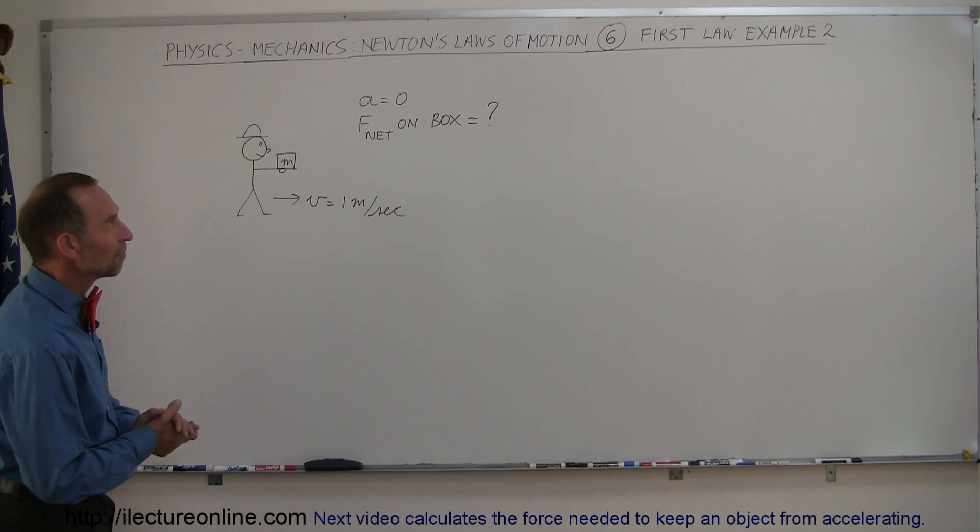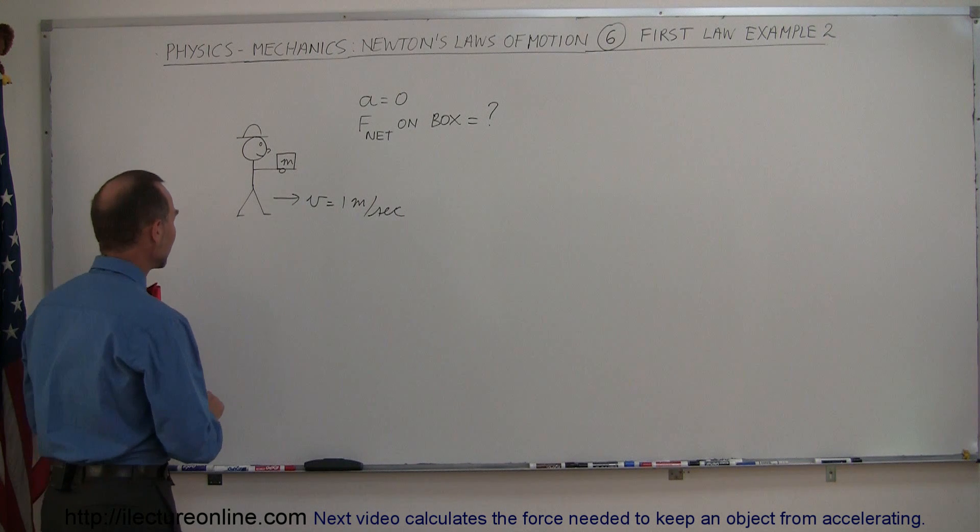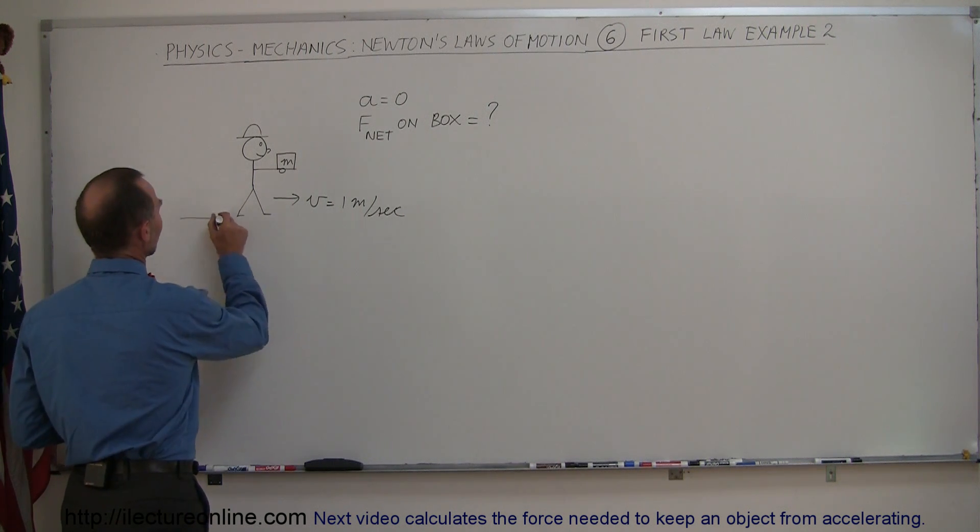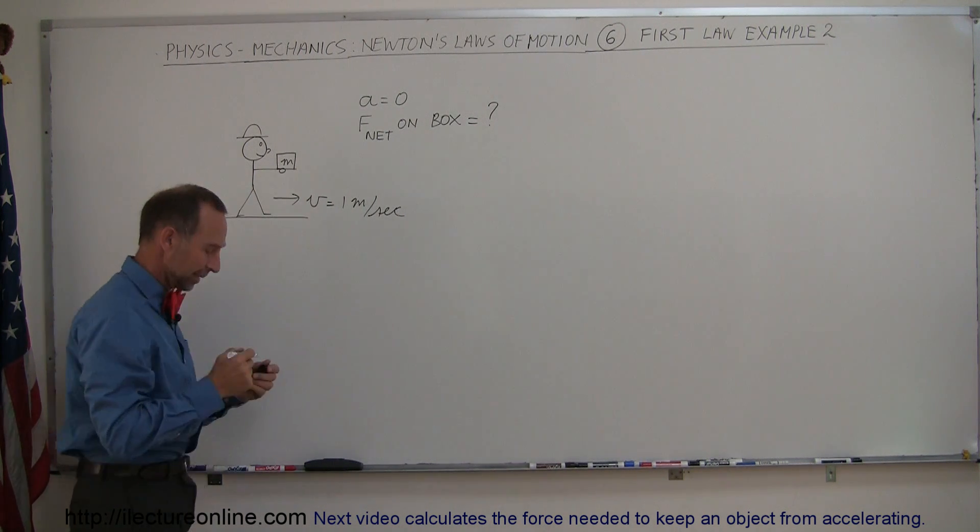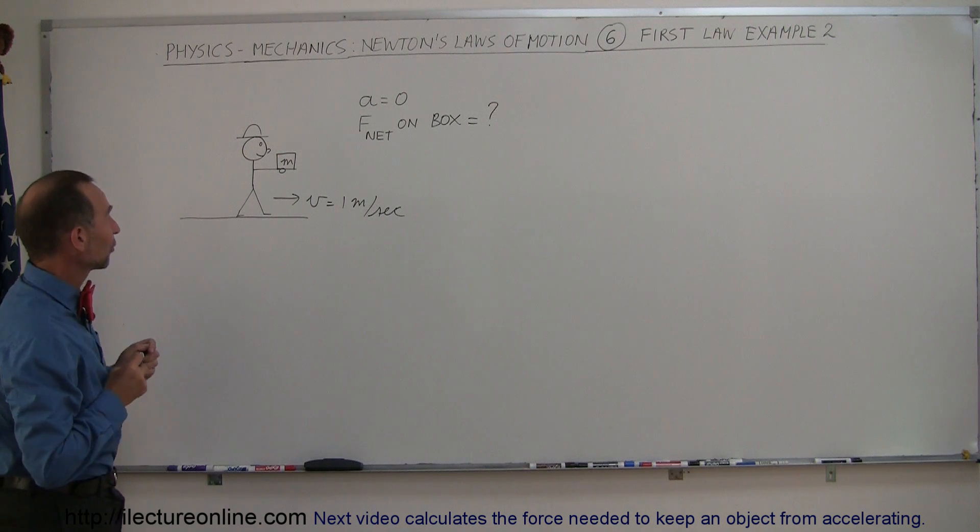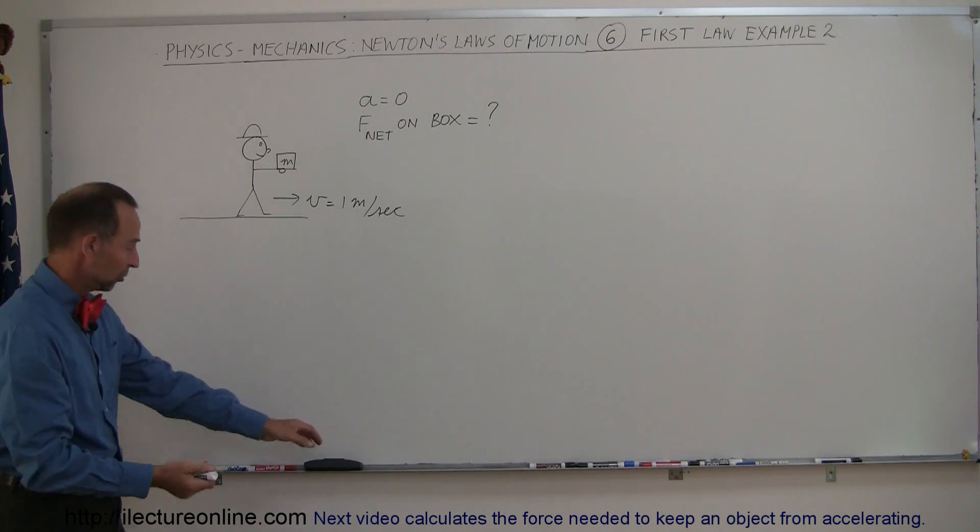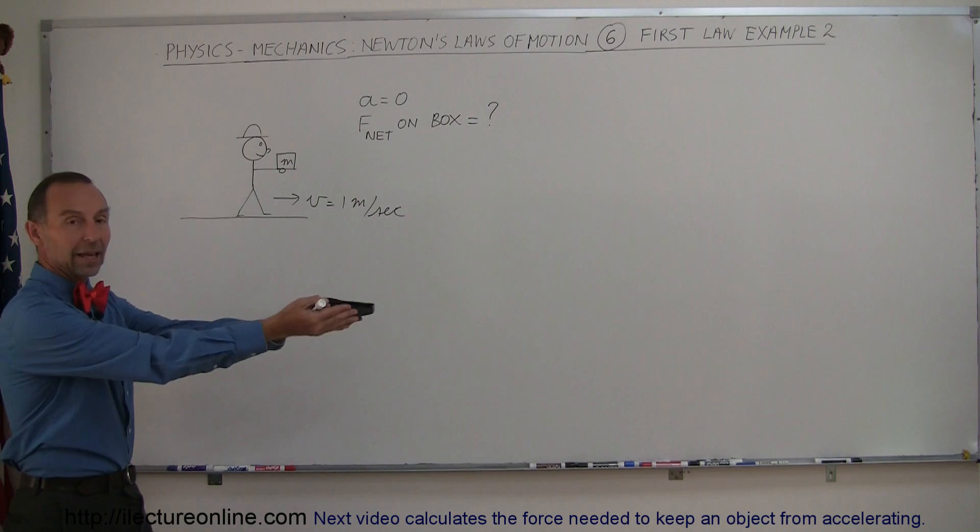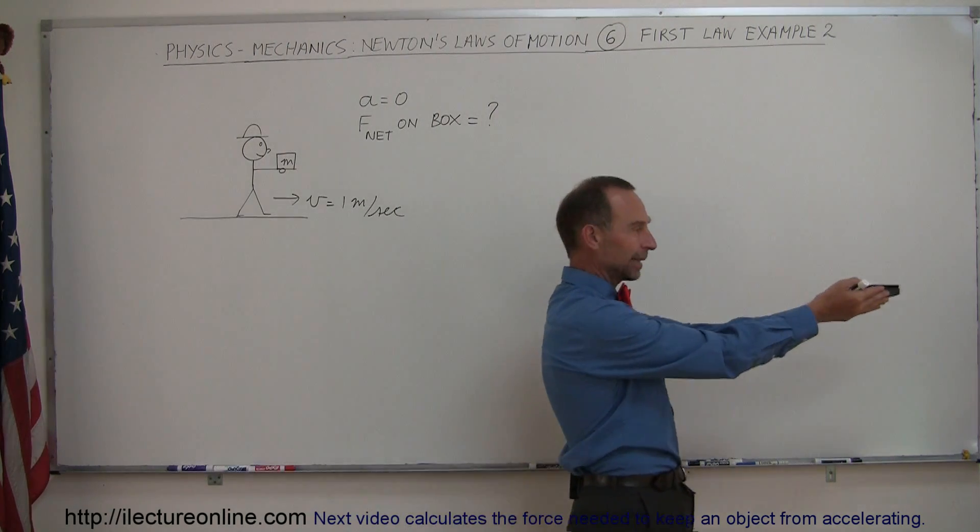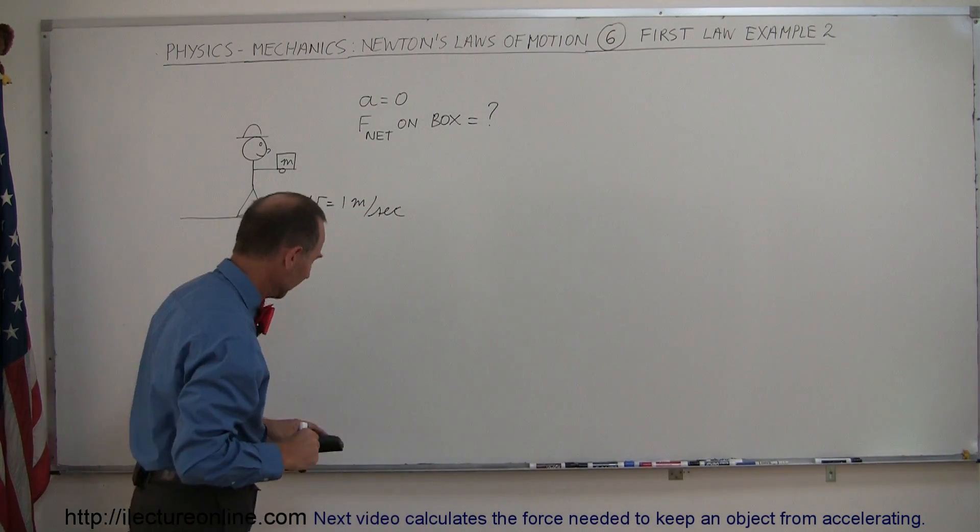Here's a second example of Newton's first law. We have a person walking, and I should draw the ground so we know it's not elevated. We have a person walking on the ground carrying a package, let's say a box, carrying it across the room at a constant speed of one meter per second.